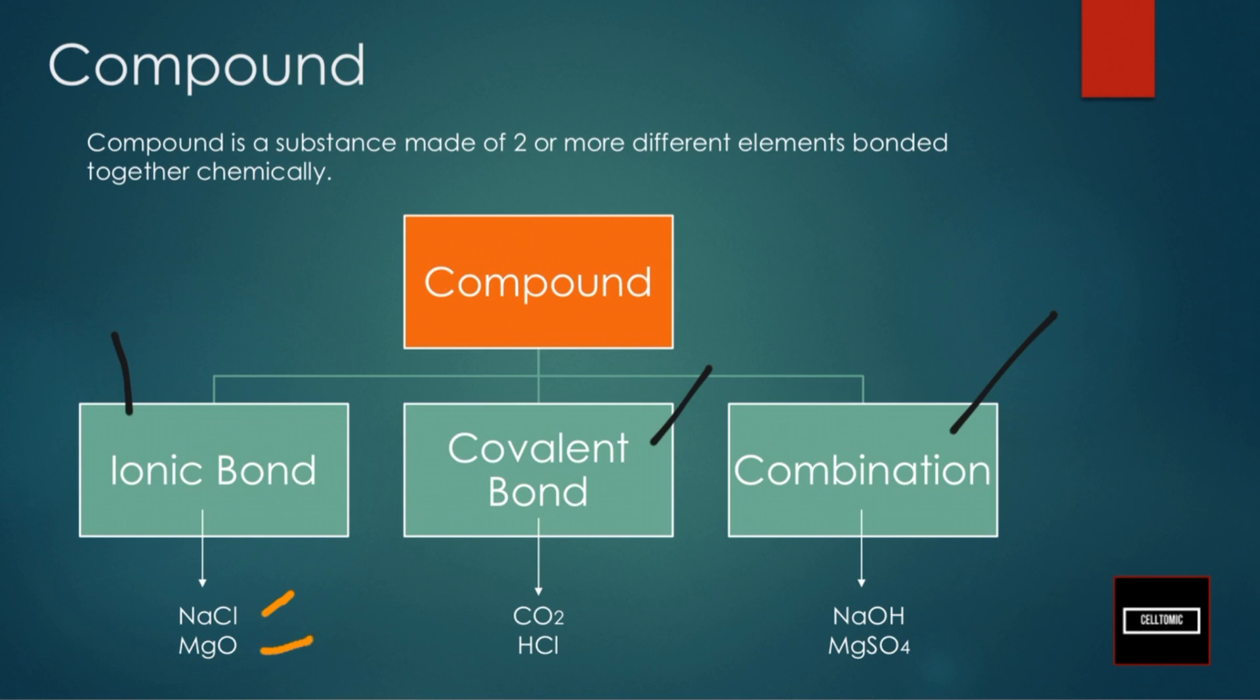So for covalent bonding, examples are CO2, carbon dioxide, stuff that you actually breathe out. And HCl, hydrogen chloride. You usually see hydrogen chloride in your chemical labs, and it's an acid.